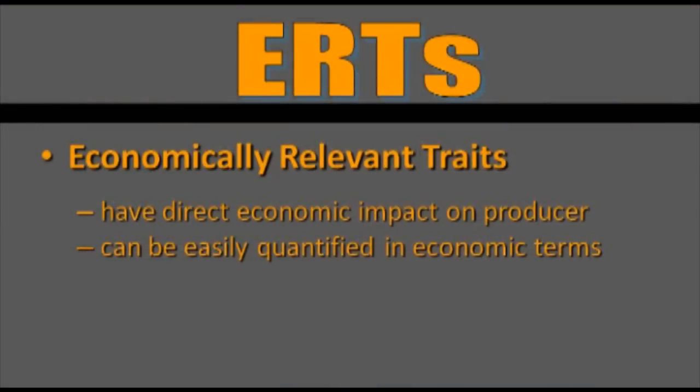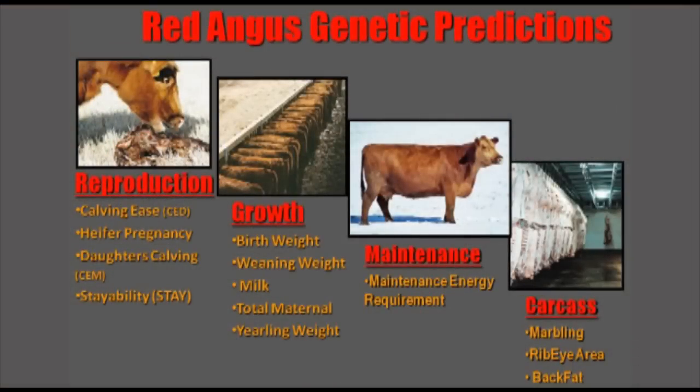An ERT is simply an evaluation or measurement of a trait that directly affects a producer's profitability. We break those ERTs into four categories that have a major impact on a producer's profitability equation: reproduction, growth, maintenance, and carcass. Red Angus describes our cattle using a very minimal number of EPDs compared to some other breeds — just 13 EPDs total.